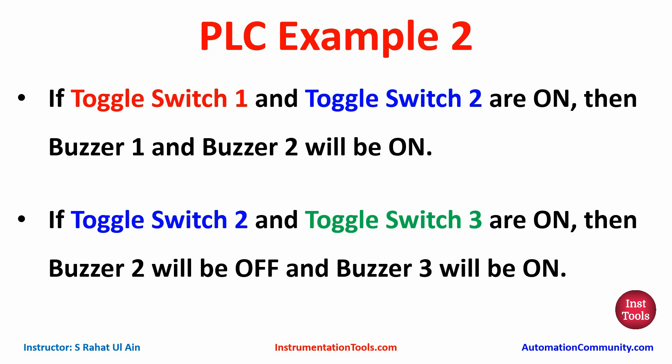Buzzer 1 will be on when switch 1 and switch 2 both are on, and buzzer 2 will also be on when both switches are on. And then if we turn on switch 2 and toggle switch 3, then buzzer 2 will be off and buzzer 3 will be on.